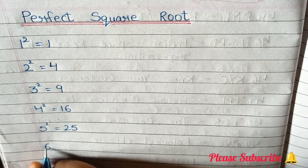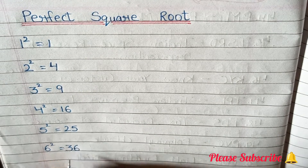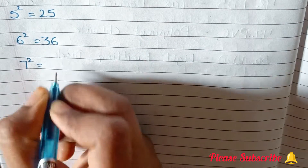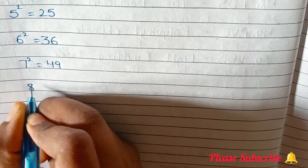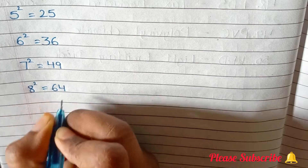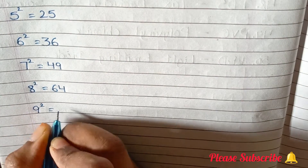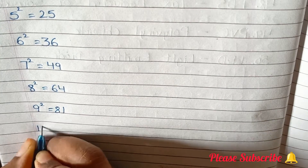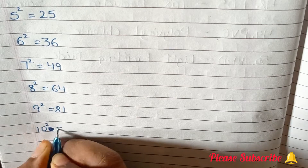6 square is equals to 36. 7 square is equals to 49. 8 square is equals to 64. 9 square is equals to 81. 10 square is equals to 100.